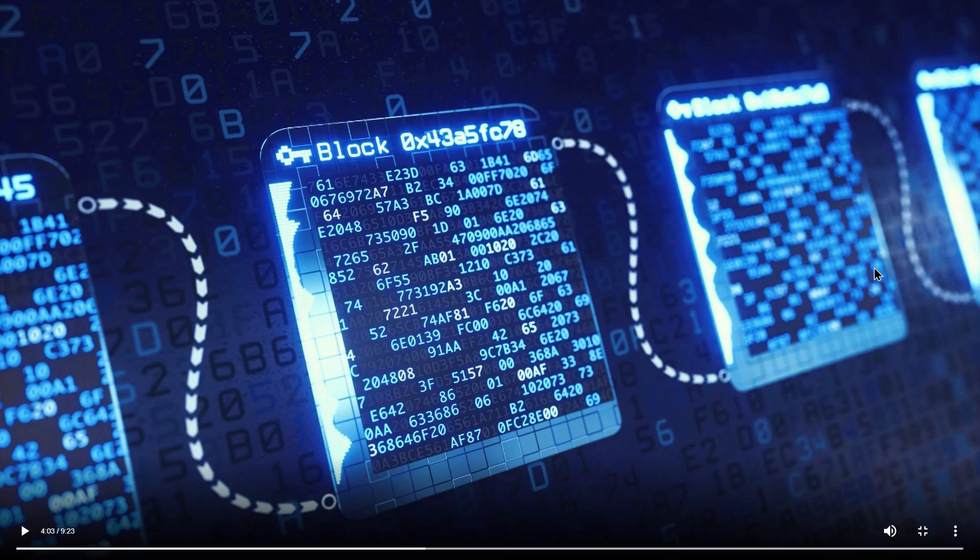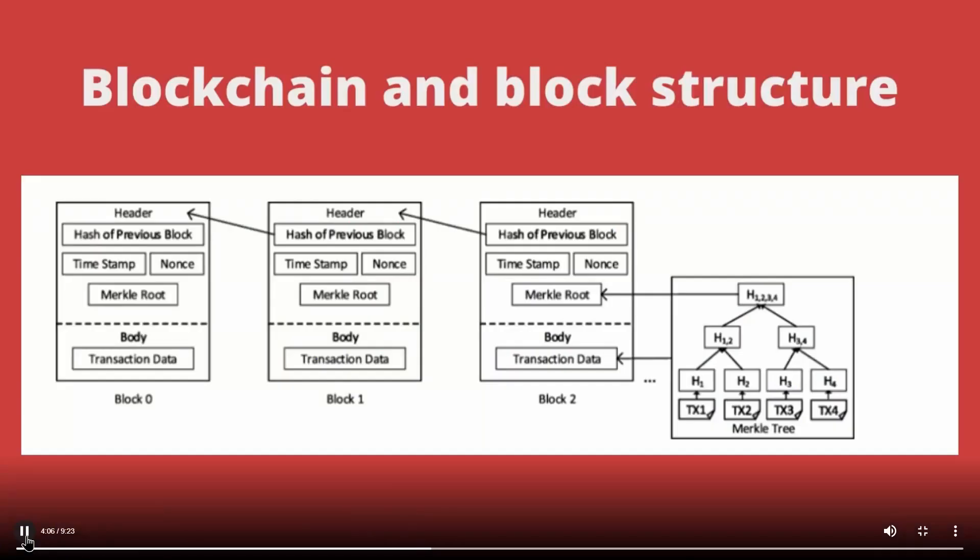Each such section is called a block. As transactions are made, they are bundled together and added to the blockchain. All of the transactions are bundled in a block, which is a small section of the entire blockchain. This breaks the entire ledger into smaller pieces, and each such piece is called a block that we can use to manage the entire system more efficiently.